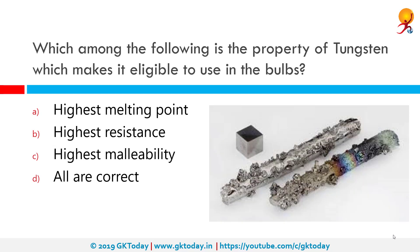Which among the following is the property of tungsten that makes it eligible to use in bulbs? The correct answer is its highest melting point. Electric heating is used to produce light in an electric bulb, where the filament must retain as much heat as possible so that it gets very hot and emits light. It must not melt at such high temperatures. Tungsten is a strong metal with a melting point of 3380 degrees Celsius, well above 3000, and is used for making bulb filaments.